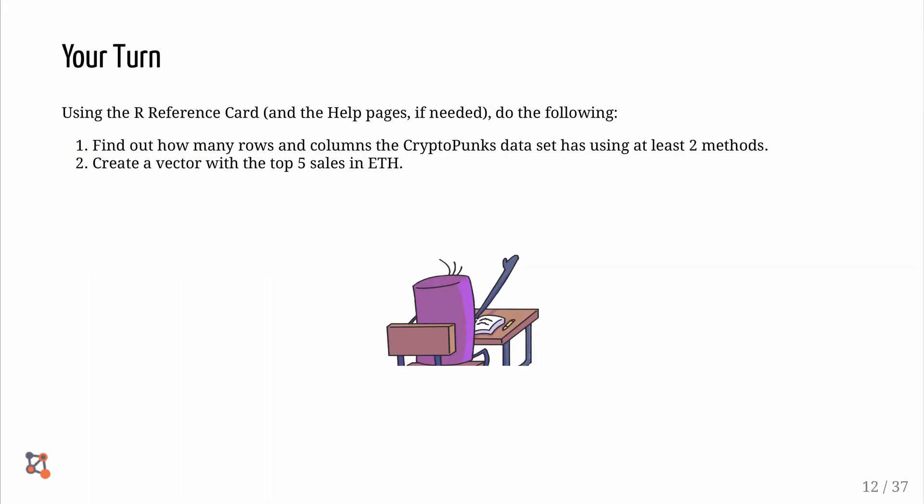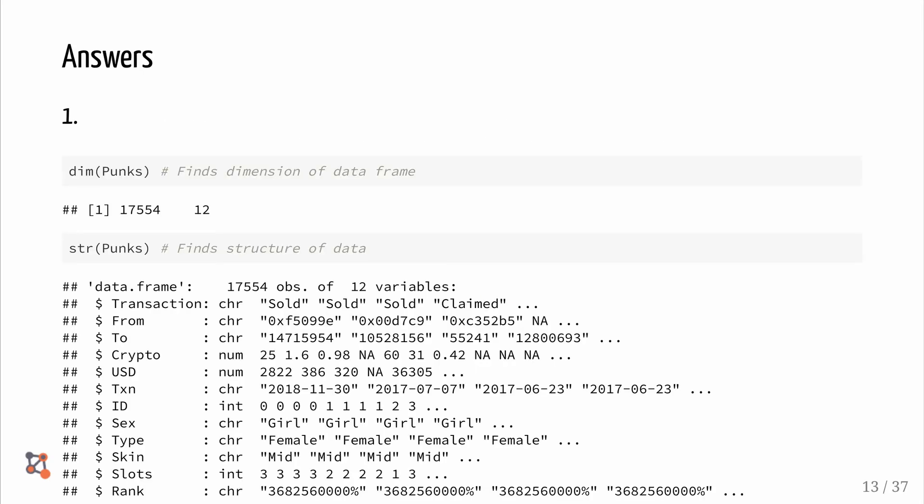Now it's your turn. Using the R reference card or the help pages, do the following. Find out how many rows and columns the CryptoPunks dataset has using at least two methods. Create a vector with the top five sales in Ethereum. Here are the answers for you to look at.